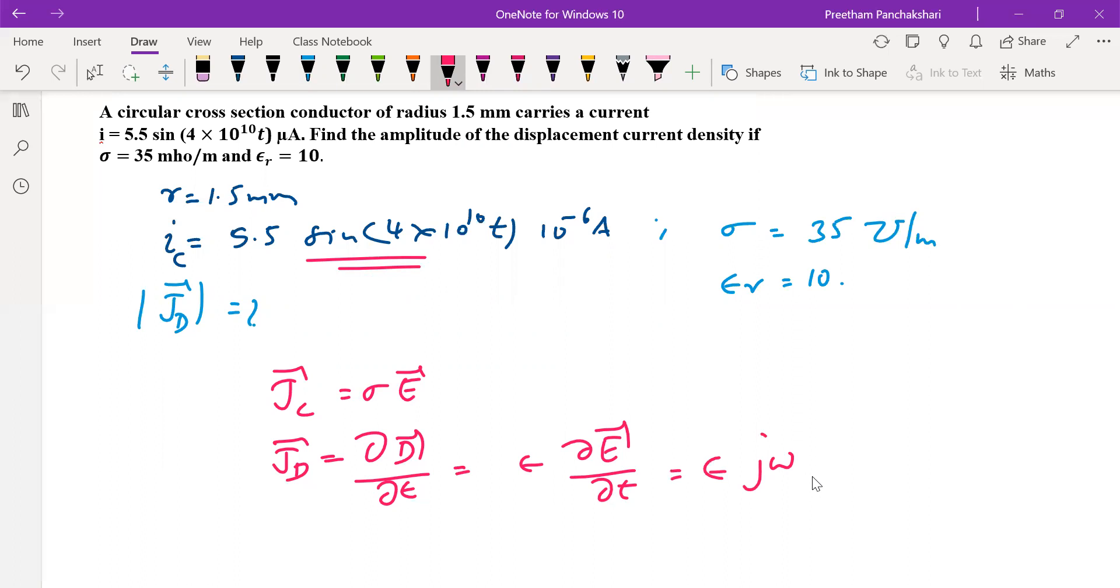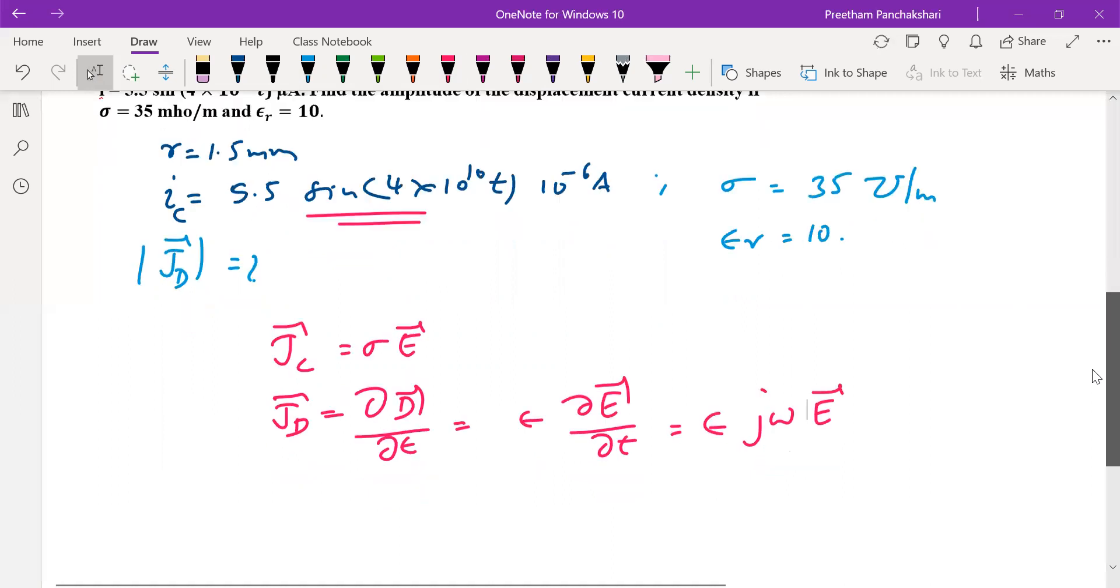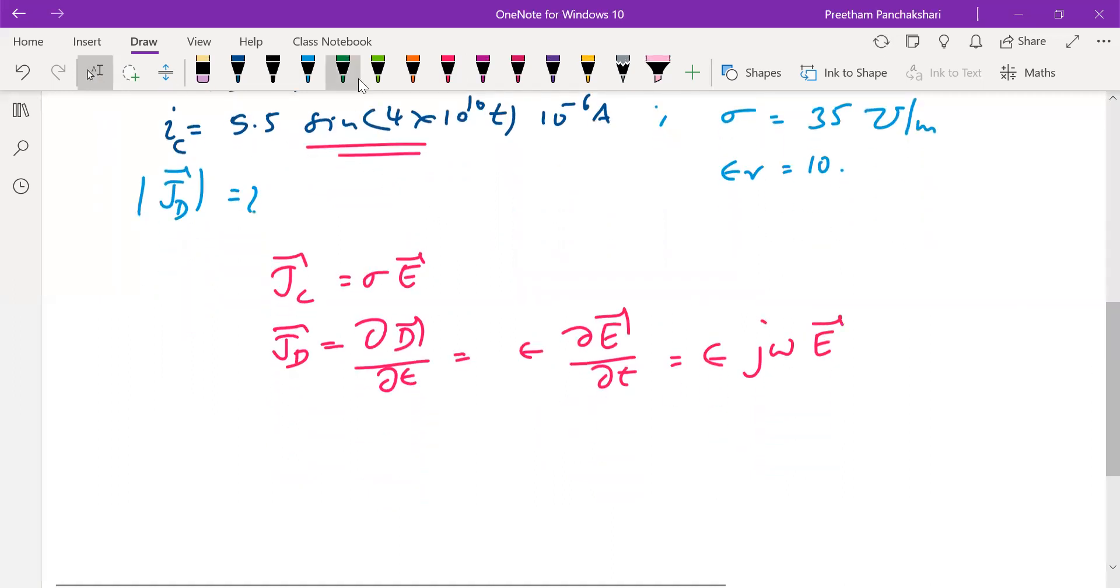So we have two equations for Jc and Jd, but both in terms of electric field E. If we take the ratio of them, what happens?